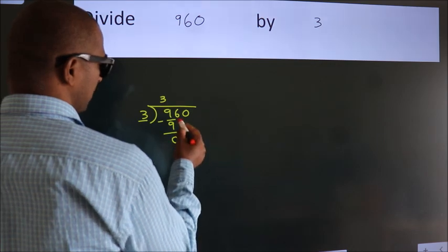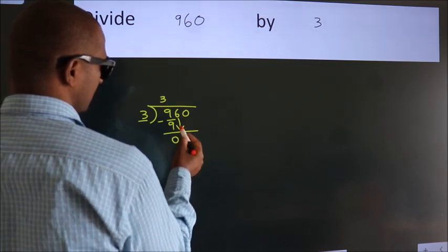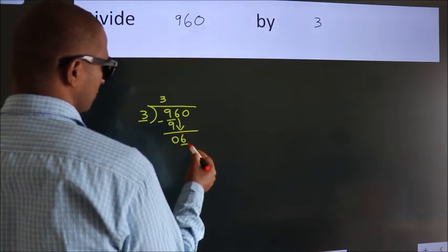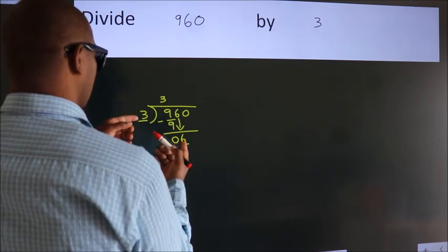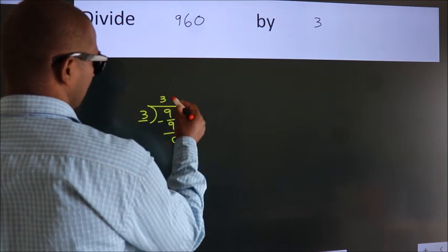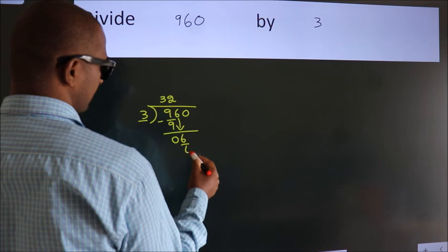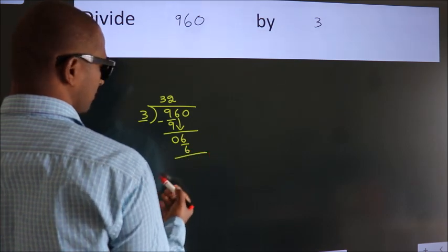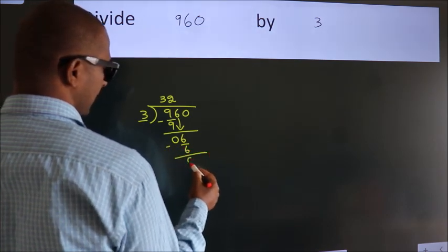After this, bring down the beside number. So 6 down. So 6. When do we get 6? In 3 table. 3 2s, 6. Now we subtract. We get 0.